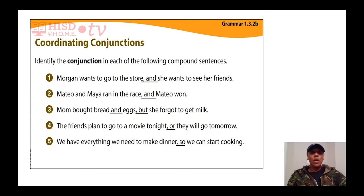Remember, a conjunction combines two simple sentences together. We're always going to see a comma right before our conjunction. Whenever we're writing a compound sentence, we want to make sure we include a comma before we write our conjunction. A conjunction can also combine two subjects together and two predicates together.